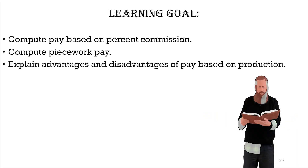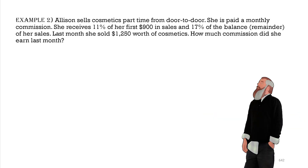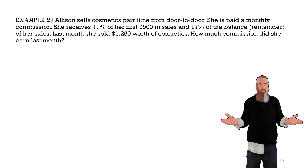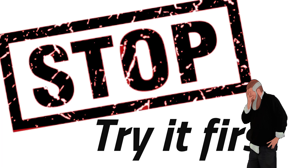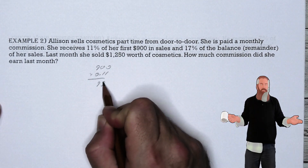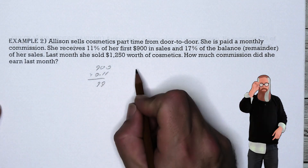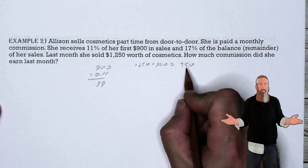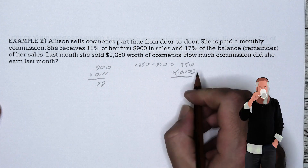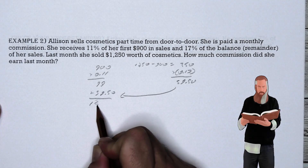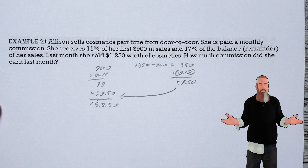Now let's compute pay based on percentage commission. Allison sells cosmetics part-time door to door. She receives 11% of her first $900 in sales and 17% of the balance. Last month she sold $1,250 worth of cosmetics. For the first $900: 0.11 × 900 = $99. The remaining $1,250 − $900 = $350 earns 17%: 0.17 × 350 = $59.50. Adding these: $99 + $59.50 = $158.50 total commission.